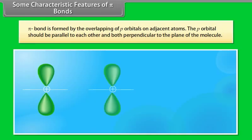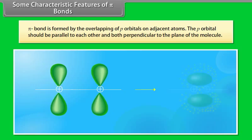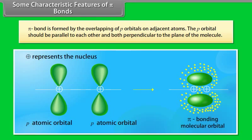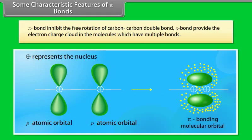Some characteristic features of pi bonds: Pi bond is formed by the overlapping of p orbitals on adjacent atoms. The p orbitals should be parallel to each other and both perpendicular to the plane of the molecule. Pi bond inhibits the free rotation of carbon-carbon double bond. Pi bond provides the electron charge cloud in molecules which have multiple bonds.